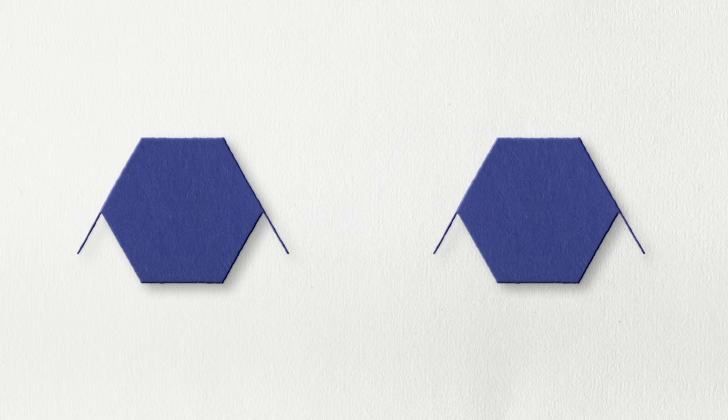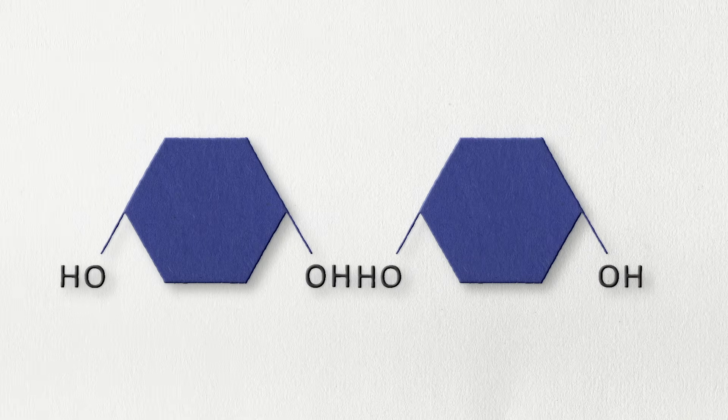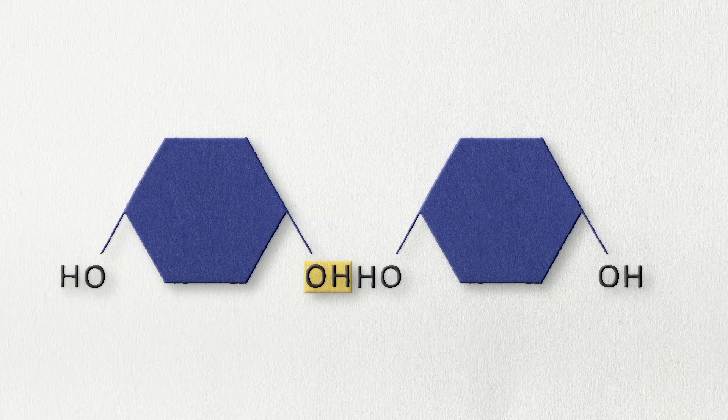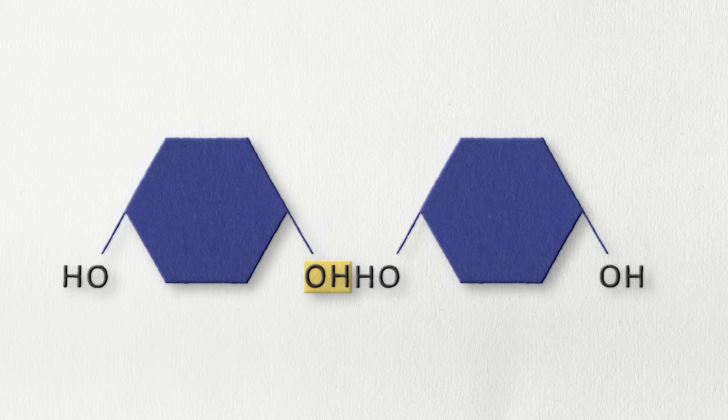Imagine you have two monomers, monomer 1 and monomer 2. When these molecules bind to create a dimer, one monomer loses a hydroxyl, or OH group, and the other monomer loses a proton, or an H, which then joins together to form water. If this process happens many times, the result is much longer chains called polymers.